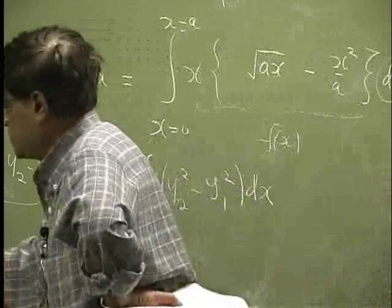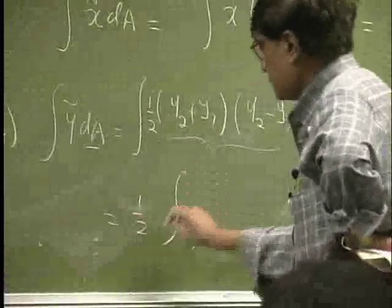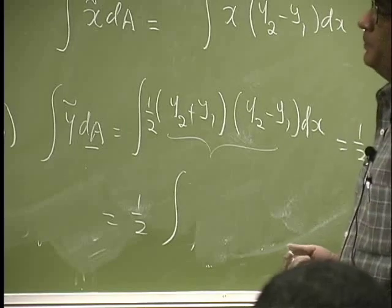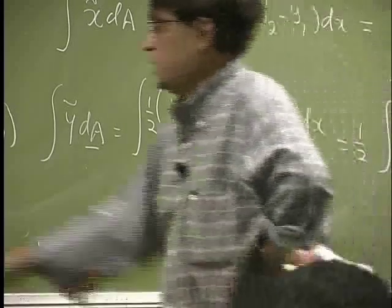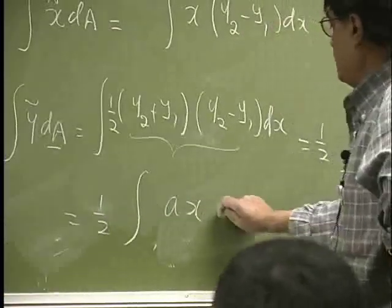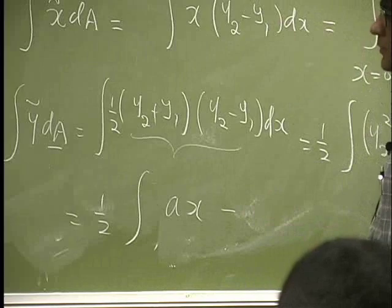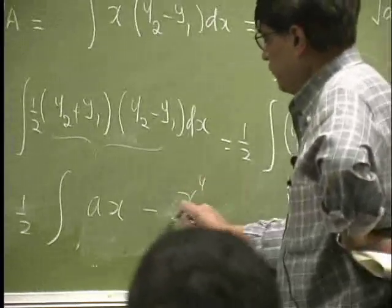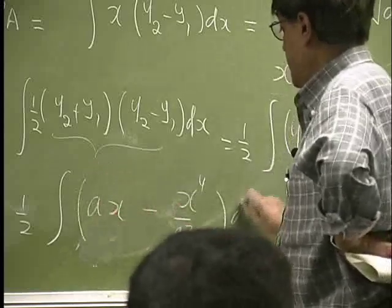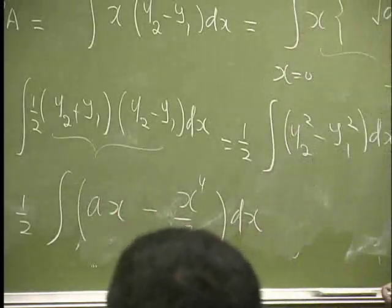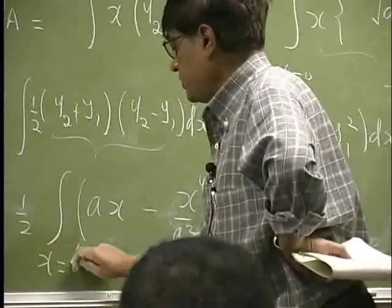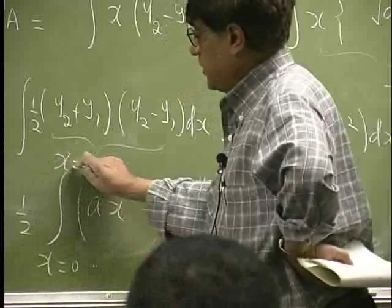Or this is half y2 squared. We know the y2, which is here. Square of that is going to be ax minus y1 squared, that will be x fourth over a squared, this whole thing times dx. And for this, the limit is the same. It's going to go from 0 all the way up to a.